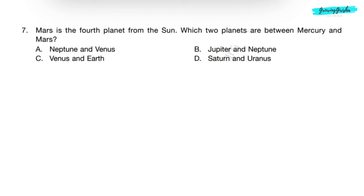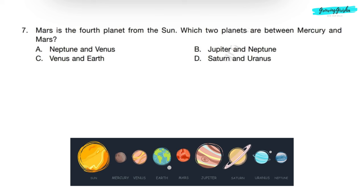Question 7: Mars is the fourth planet from the sun. Which two planets are between Mercury and Mars? The planets in sequence from sun are Mercury, Venus, Earth, Mars, Jupiter, Saturn, Uranus and Neptune. Thus, the two planets between Mercury and Mars are Venus and Earth. So correct answer is option C.